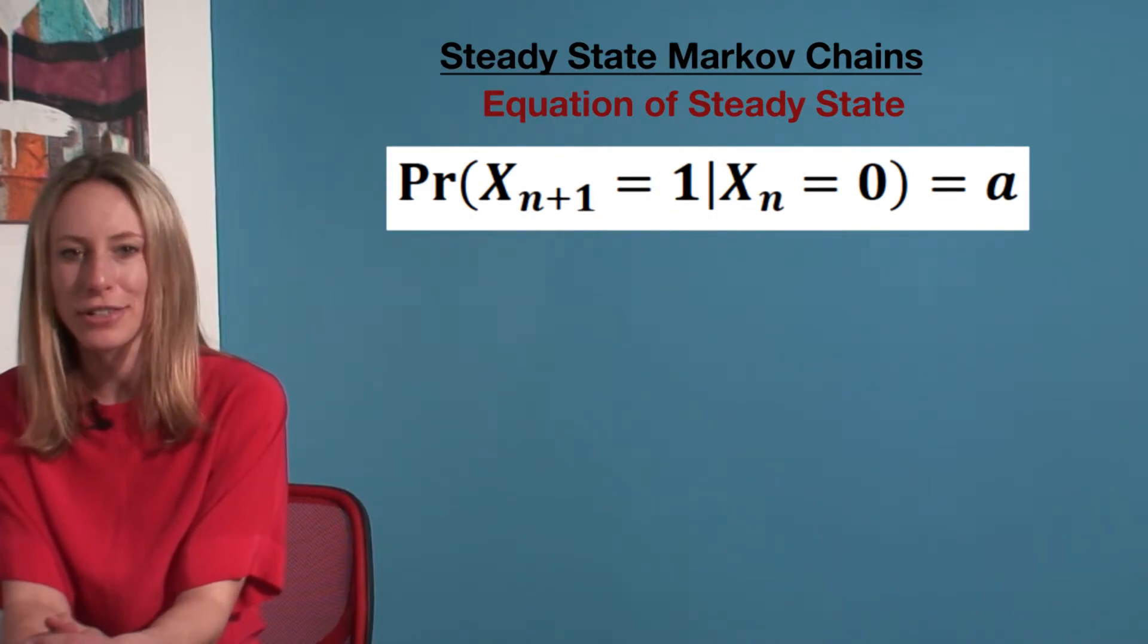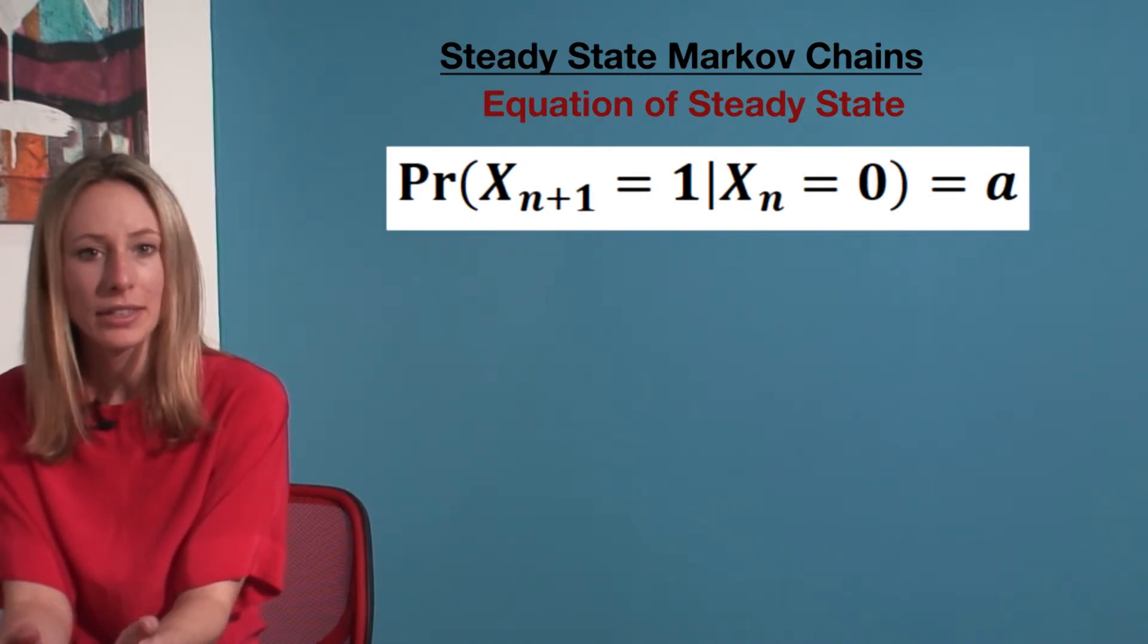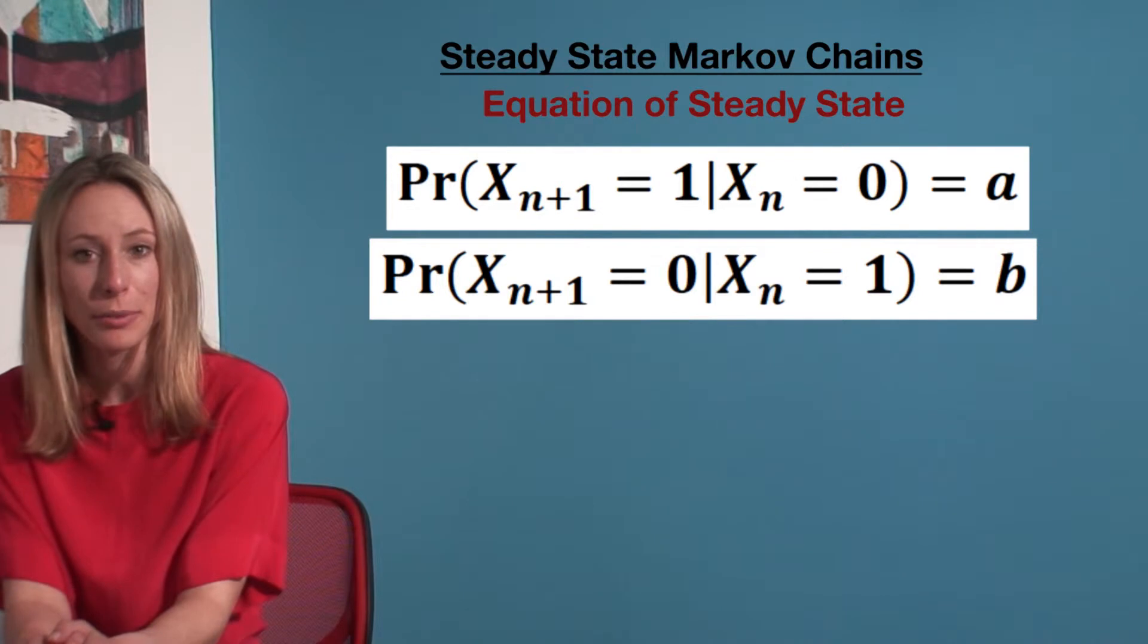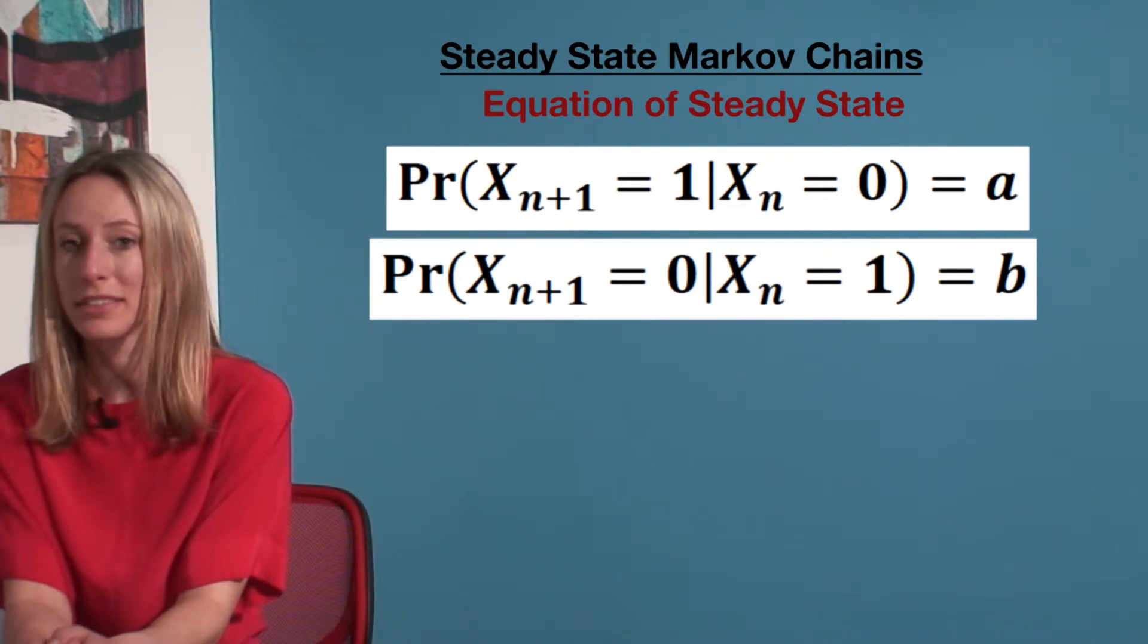To get the elements of our transition matrix, we set the probability of state one in the future given state zero in the present to be a. We set the probability of state zero in the future given state one in the present to be b.